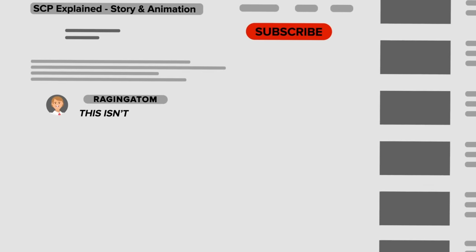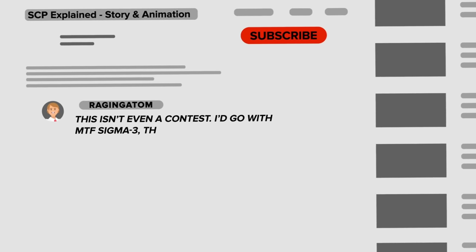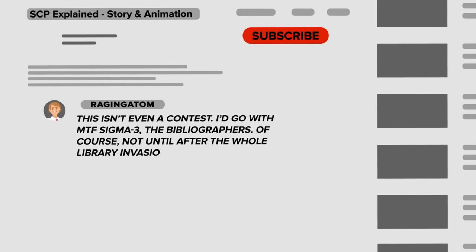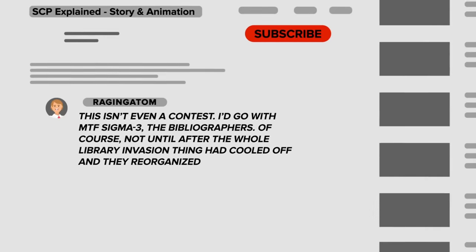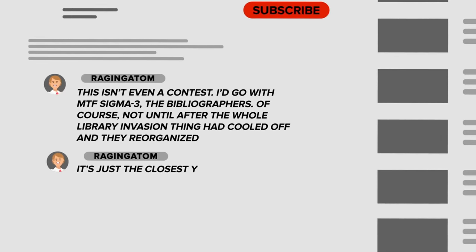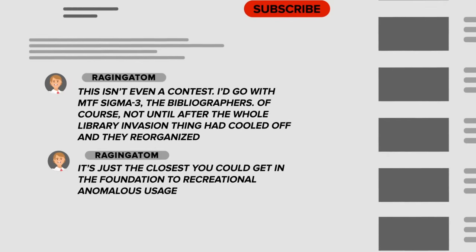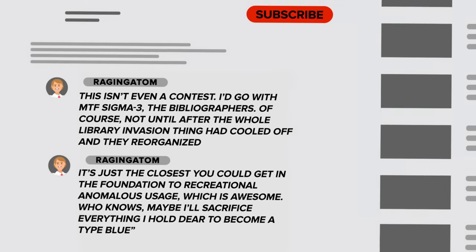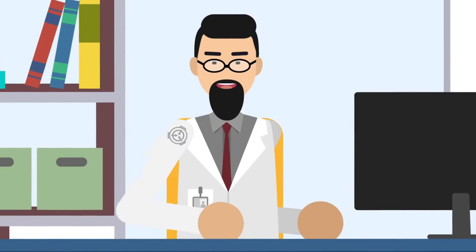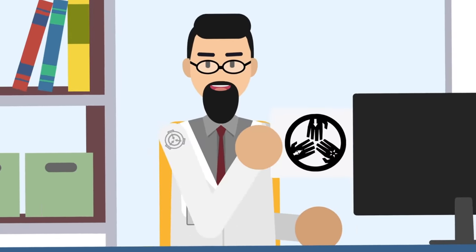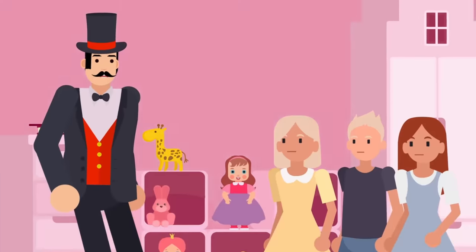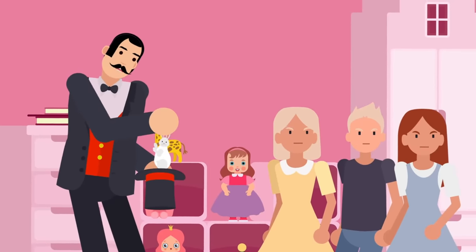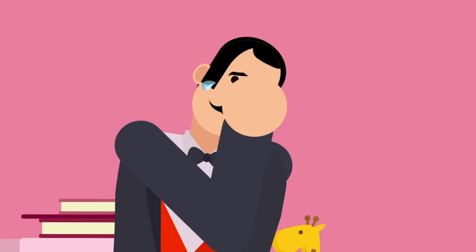The Raging Atom said, This isn't even a contest. I'd go with MTF Sigma-3, The Bibliographers. Of course, not until after the whole library invasion thing had cooled off and they reorganized. It's just the closest you could get in the Foundation to recreational anomalous usage, which is awesome. Who knows? Maybe I'll sacrifice everything I hold dear to become a Type Blue. Smart move, waiting for the action to cool off first. If you end up becoming a Type Blue, let us know. I need a magic act for my nephew's birthday party. And he said last year's Amazing Melvin pulling a rabbit out of a hat wasn't cool enough for his sixth grade friends. He's really hurtful.